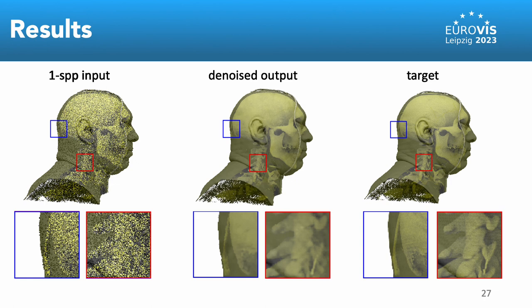the output denoised image from the one sample path per pixel image, and the target image rendered using 256 sample paths per pixel. A denoiser with the additional features can effectively remove the noise from the image.